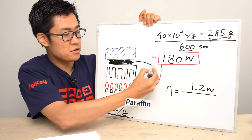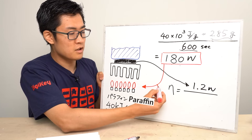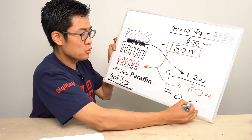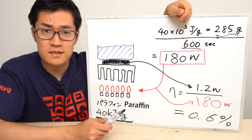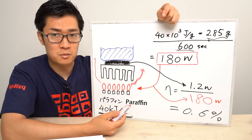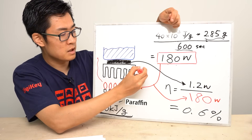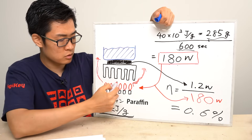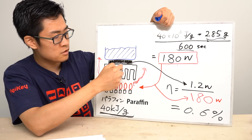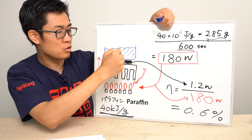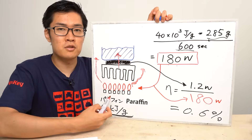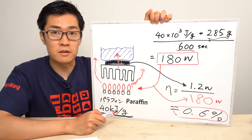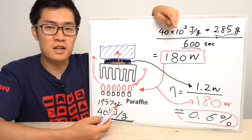On the other hand, the maximum output power from the Peltier devices is 1.2 watts. Dividing 1.2 watts by 180 watts gives an efficiency of around 0.6% — the efficiency is extremely low. The main reason is that the heat from the candle did not transfer well to the heat sink and escaped into the atmosphere. Another reason is that heat from the candle transferred through the Peltier devices and further to the ice water, meaning a lot of heat escaped. I think the efficiency of the Peltier devices alone is probably around a few percent.